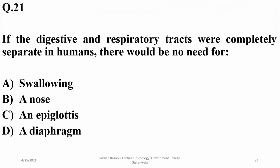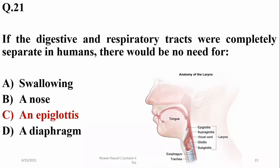Question twenty: if the digestive and respiratory tracts were completely separated in humans, there would be no need for the epiglottis, because the epiglottis functions to prevent food from entering the trachea.